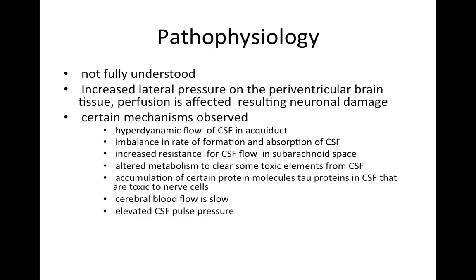The mechanism of the disease is not fully understood. The basic mechanism is increased lateral pressure on the periventricular brain tissue, causing ischemia and perfusion failure resulting in neuronal damage. Certain mechanisms are observed: there is hyperdynamic flow of CSF in the aqueduct, and an imbalance in the rate of formation and absorption of CSF, which results in accumulation of cerebrospinal fluid in the ventricular cavities, resulting in ventricular dilatation and pressure effect on the surrounding brain tissue.